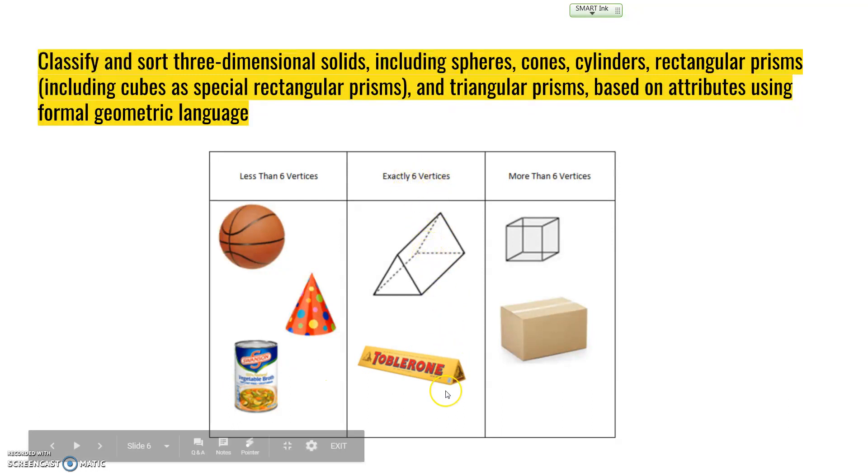Triangular prisms have exactly six vertices. We see here, here, and here—that's three. And then on the other end, four, five, and six. A Toblerone is a great example of a triangular prism.